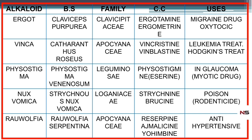Ergometrine is used as an oxytocic. One more thing — ergometrine is water-soluble. The second one is vinca. Vinca's biological source is Catharanthus roseus, family Apocynaceae. The main constituents are vincristine and vinblastine. They are anti-cancerous drugs. Vincristine is used for the treatment of leukemia, while vinblastine is used for the treatment of Hodgkin's disease.